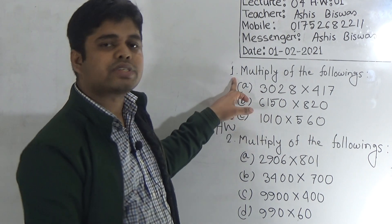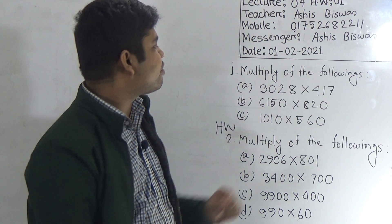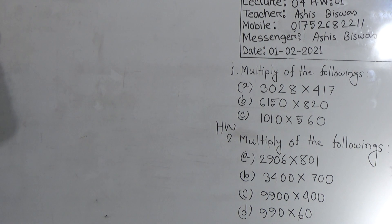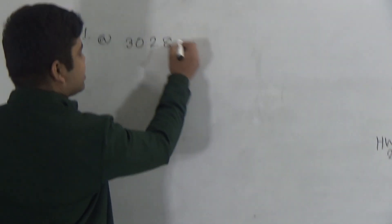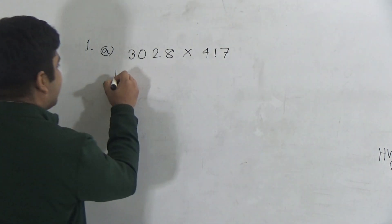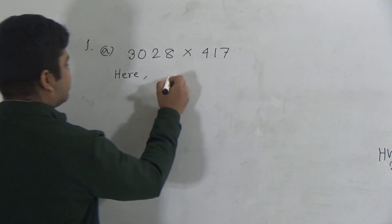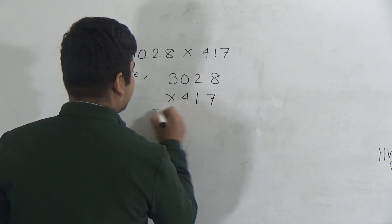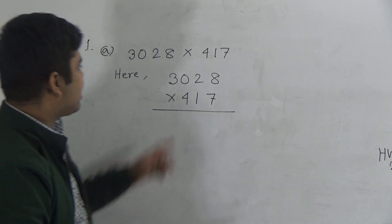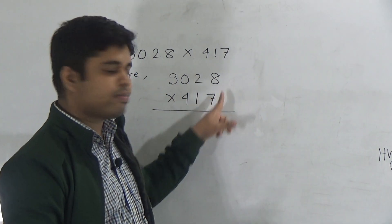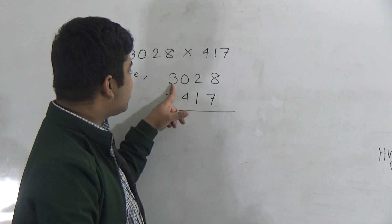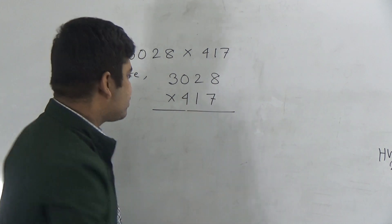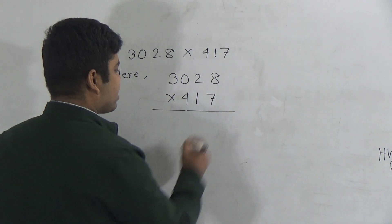Let us start today's lecture. First we solve questions a, b, and c of question number one — multiply the following. Question 1a: 3028 multiplied by 417. I write this here. First I multiply 3028 by 7, then by 1, then by 4. So 7 eights are 56 — write 6, carry 5.